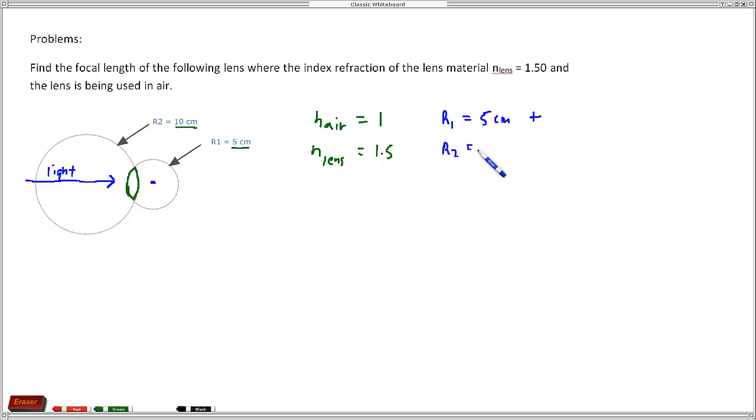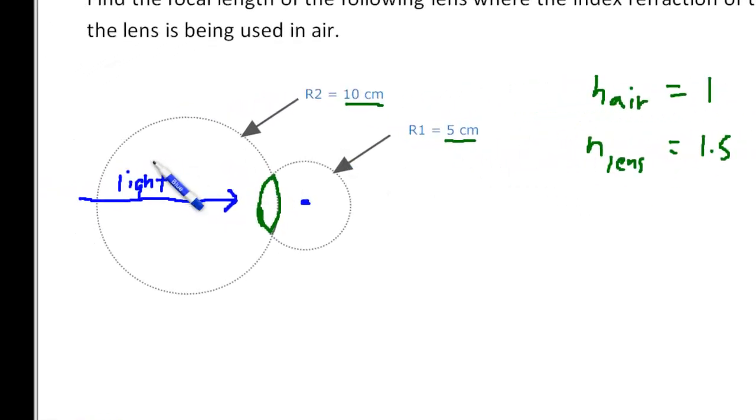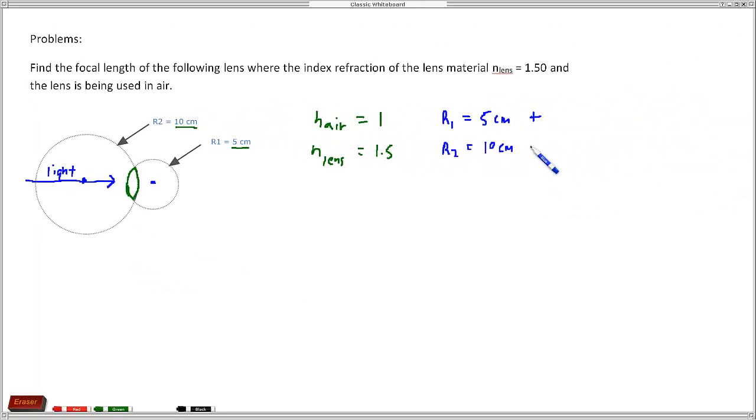For R2, which is 10 centimeters, the light has already passed through the center of curvature for that lens before it gets to the backside of the lens, which is this part of the lens here, this radius of curvature. So that means that we're going to have a negative sign for that.